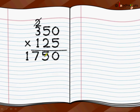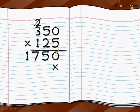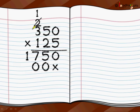We cut the carry over 2 on top so that we don't get confused in the next step. Then we start with the tens place of the multiplier, which is 2. We are going to multiply 350 by 2, but before that we write x below the ones position of the previous product. We start multiplying: 2 multiplied by 0 is 0, 2 multiplied by 5 is 10, so 0 is written here and 1 goes on top of the 3. That's why we cut the 2, so we are not confused about which carry over to add in the second step.